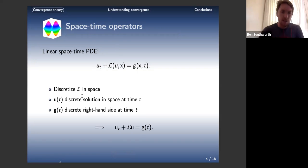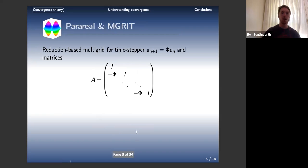In a typical method of lines approach, we discretize L in space and end up with this semi-discrete problem in time and a big system of ODEs. We're going to apply parareal and MGRIT to that. There's a lot of different perspectives on how you can interpret MGRIT and parareal. I'm going to take the reduction-based multigrid approach because it's very amenable to the theory. The idea is simple: if we have a time-stepping scheme where our new time step u_n+1 is phi times our old time step u_n plus maybe some right-hand side.